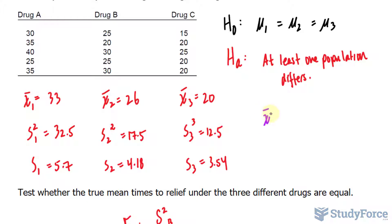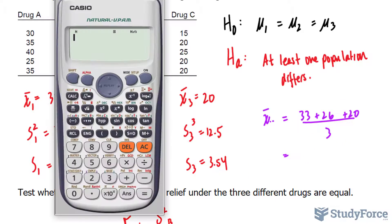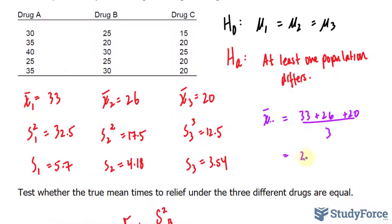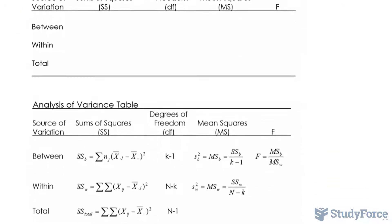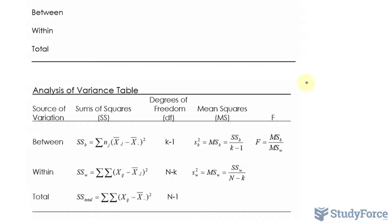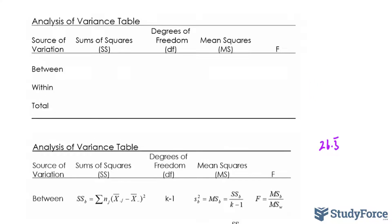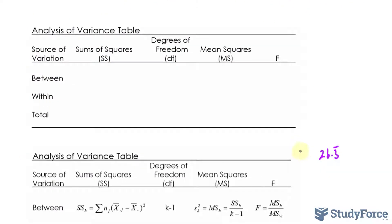I'll write down x-bar with these two dots: 33 plus 26 plus 20 divided by 3. And we get 26.3 repeating. And according to the formula, we subtract it from each of the averages. So it was 26.3. That very first average was 33. 33 minus that, raised to the power of 2.